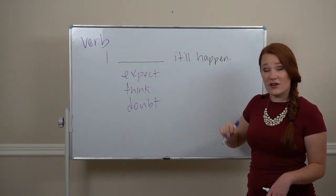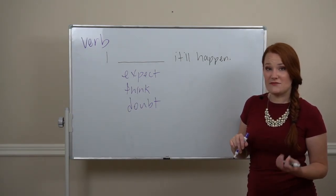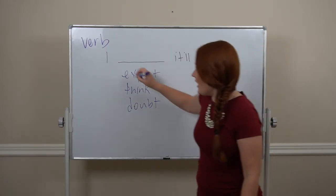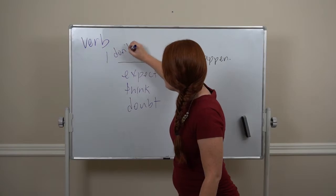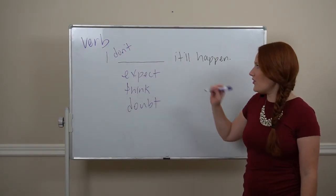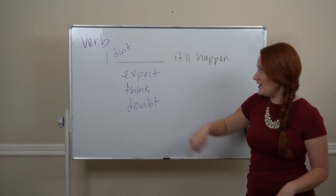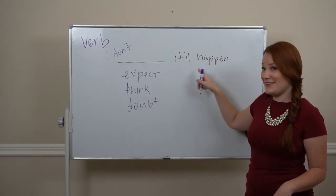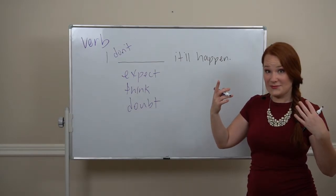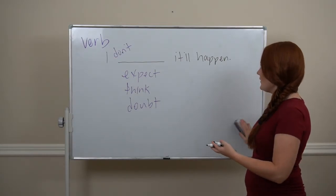Now these ones are verbs, so to make them negative, we'll have to add our auxiliary verb and not. So I don't expect it'll happen, won't happen. I don't think it'll happen, it won't happen. I don't doubt it'll happen. Then we've got the reverse. We think it will happen.